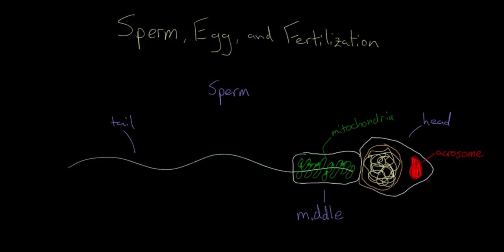But that's pretty much it. There's a tail at the back to provide propulsion, some mitochondria in the middle section to give energy to the tail, a head which contains the nuclear material and the acrosome. This is a pretty bare bones cell. It's designed to move fast and to get to the egg. There are no bells and whistles here.